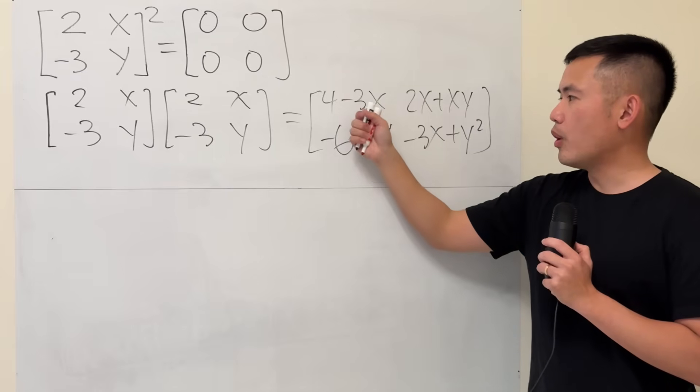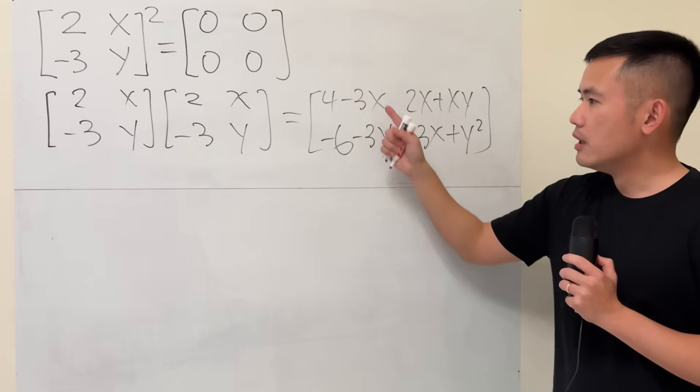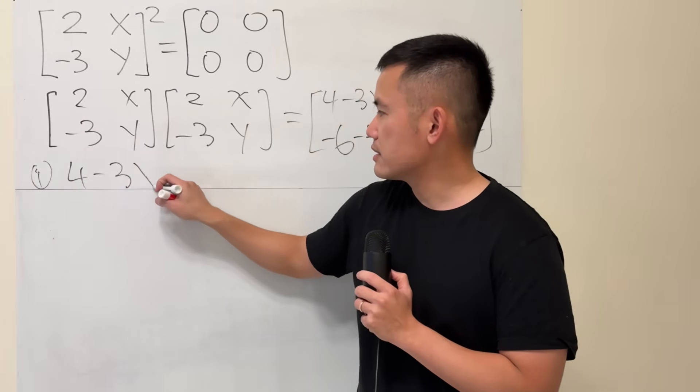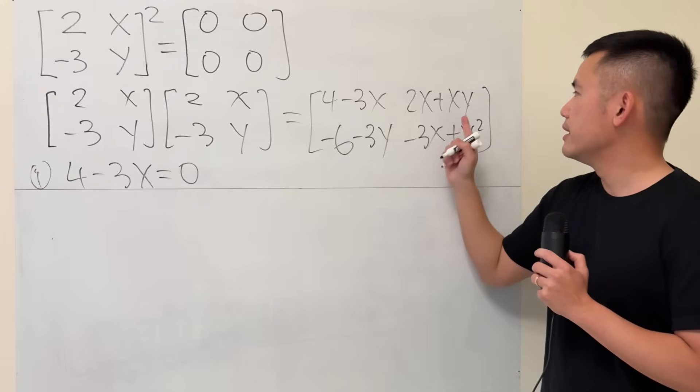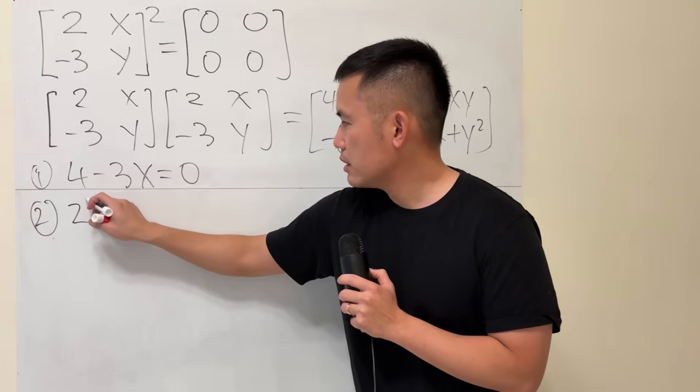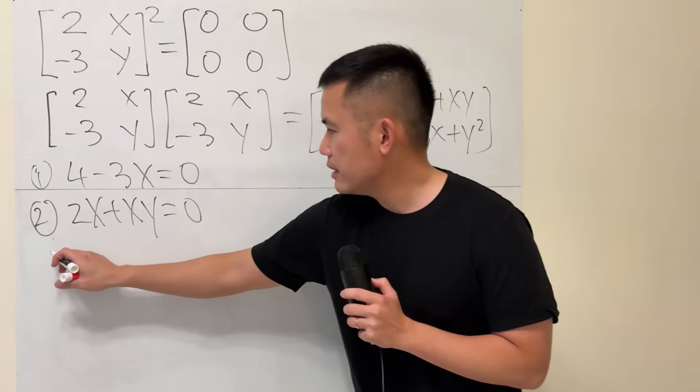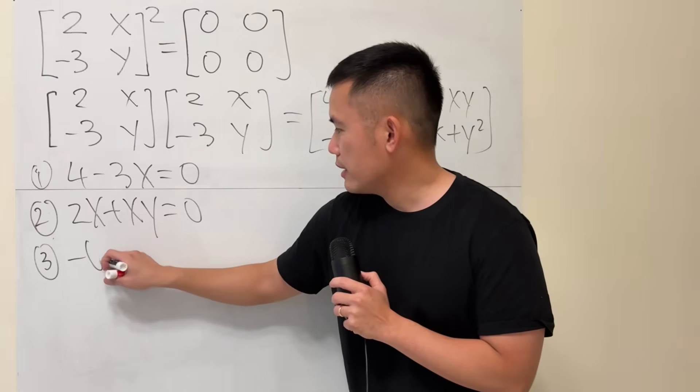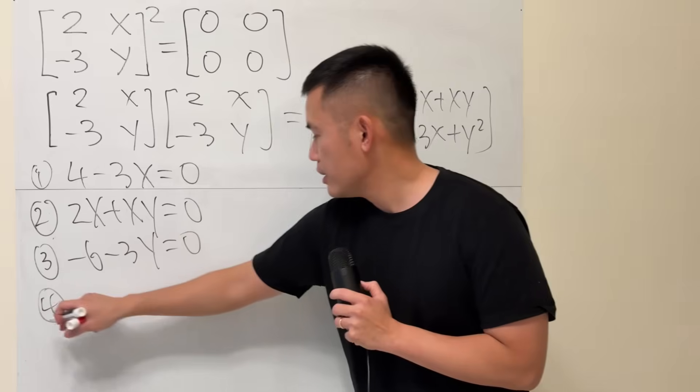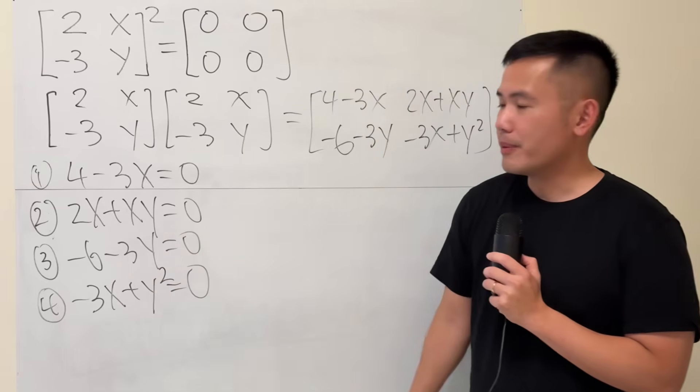Now, we just have to make sure that all the entries are equal to 0. So, we are going to have these four conditions. Firstly, our condition is that 4 minus 3x has to be equal to 0. And then next, I will just put this down. 2x plus xy has to be equal to 0. And then, negative 6 minus 3y is equal to 0. And then lastly, negative 3x plus y squared is equal to 0.